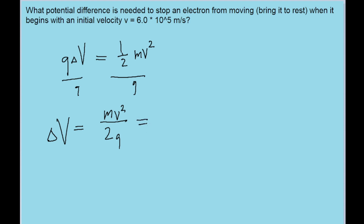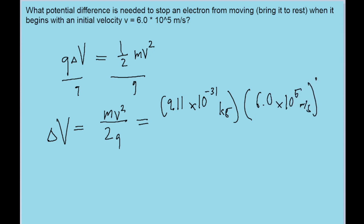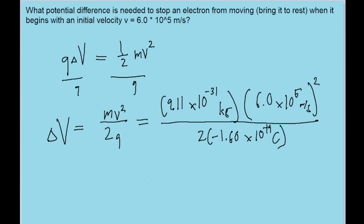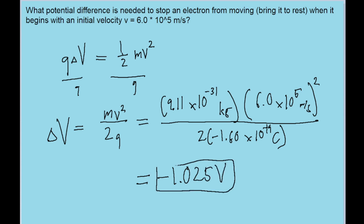Now we can plug in the values. The mass of an electron is equal to 9.11 times 10 to the power of negative 31 kilograms. The speed is given to us at 6.0 times 10 to the power of 5 meters per second, and that is squared. For the charge, we use negative 1.60 times 10 to the power of negative 19 coulombs. Putting this into our calculator, we find an electric potential difference of about negative 1.025 volts — that is the potential difference needed to bring this particle to rest.